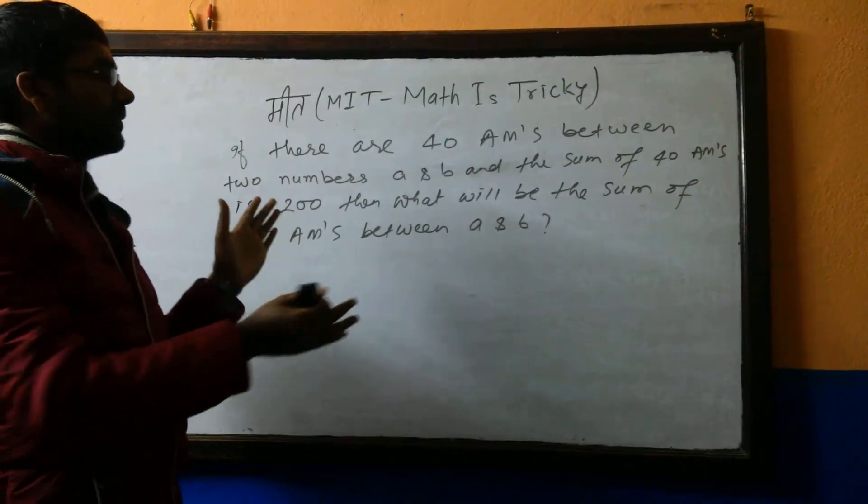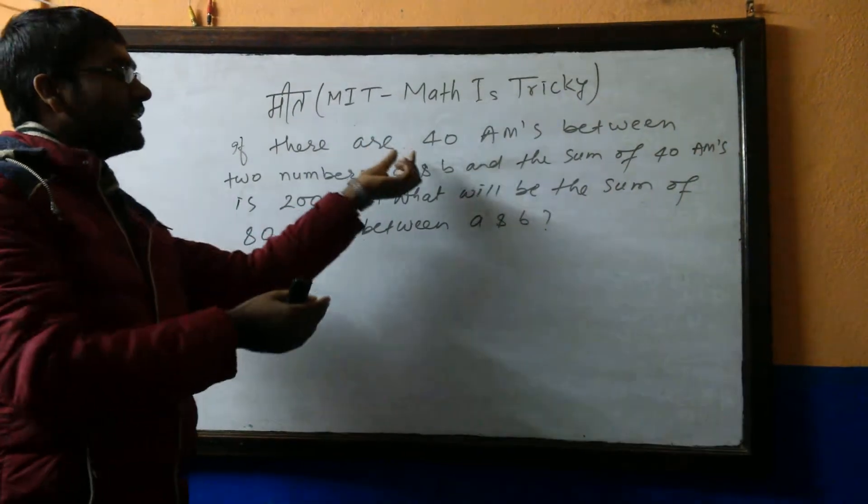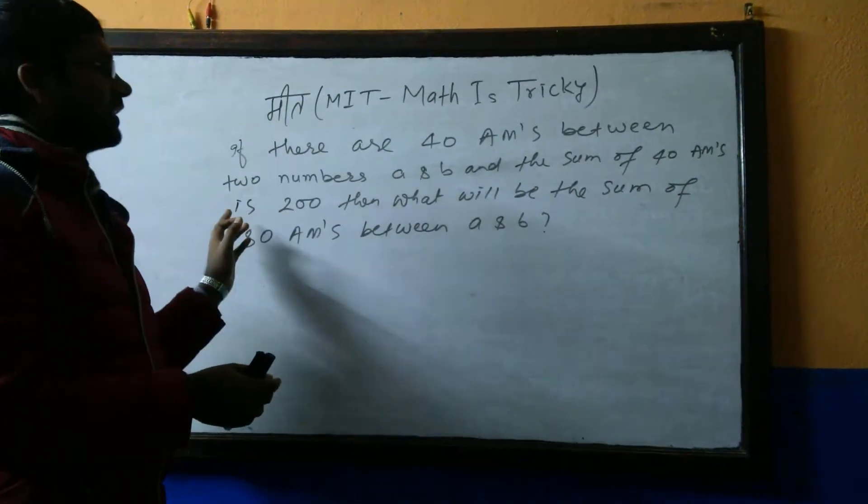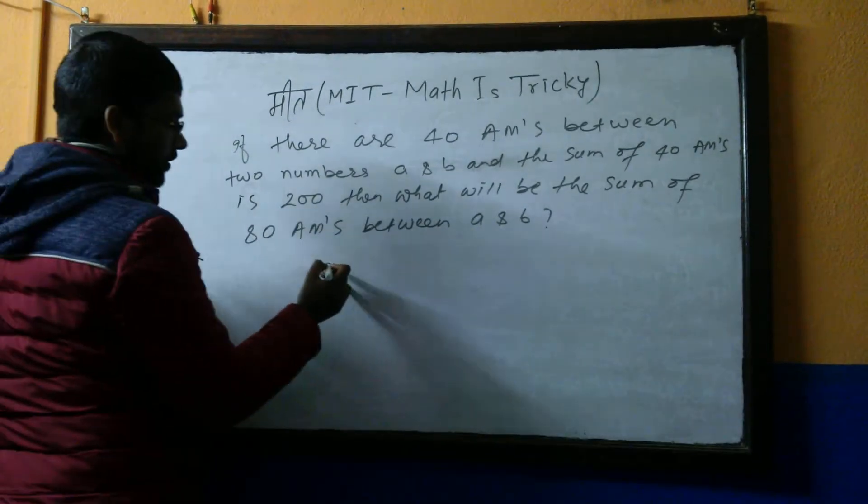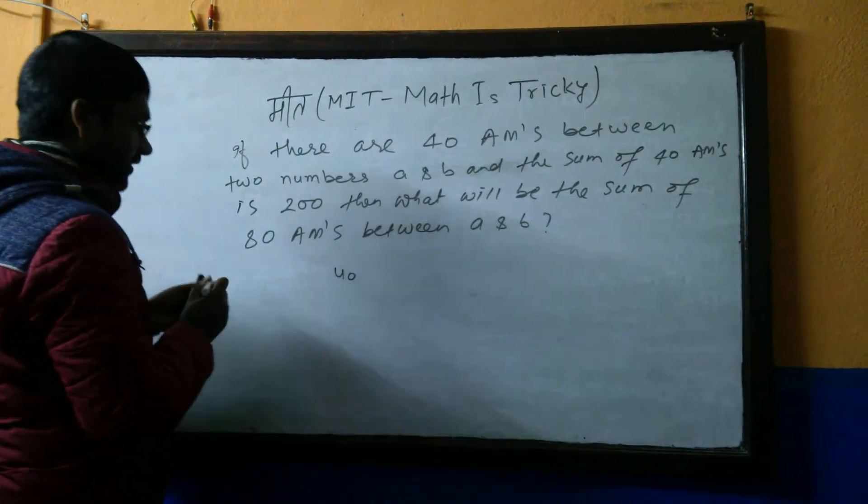Okay, so there are 40 AMs between A and B. The meaning is, if the sum of 40 AMs between A and B is actually given here, sum of 40 is 200.